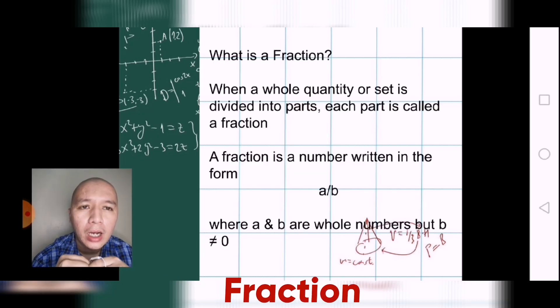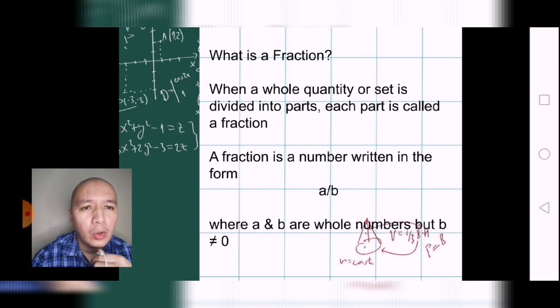First off, let's go to fractions. When we say a fraction, it is when a whole quantity or set is divided into parts, and then each part is called a fraction. A fraction is a number written in the form a over b, where a and b are whole numbers, but b cannot be equal to 0. So let me emphasize that in this example, a over b are whole numbers, but b cannot be equal to 0.